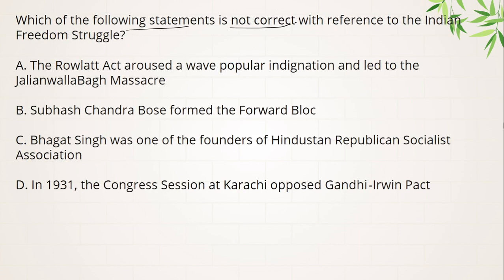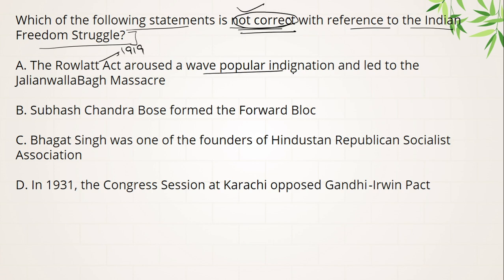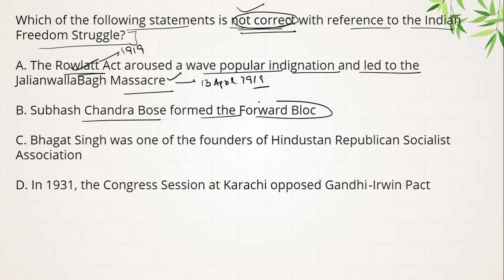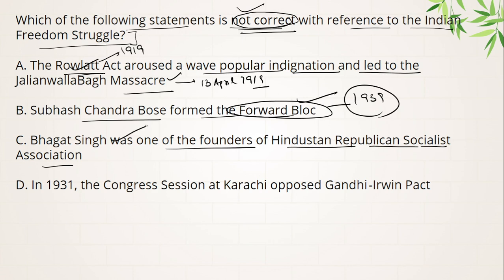Next — which of the following statements is not correct with reference to the Indian Freedom Struggle? Your options: The Rowlatt Act, passed in 1919, aroused a wave of popular indignation and led to the Jallianwala Bagh massacre — this is a correct statement. Subhash Chandra Bose formed the Forward Block in 1939 — correct. Bhagat Singh was one of the founders of Hindustan Republican Socialist Association — also correct; in 1928, Bhagat Singh and Chandra Shekhar Azad created this association.